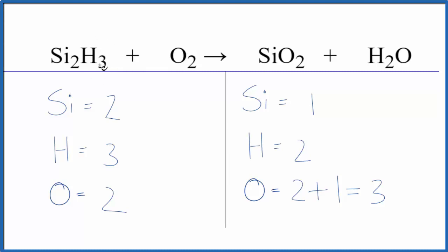So I can see right away I have these 3 hydrogens, so because I have the 3 hydrogens, I want to get that to be an even number. I'm going to put a 2 here just to start out. Let's see how that changes things.